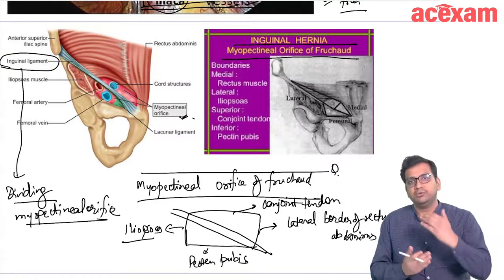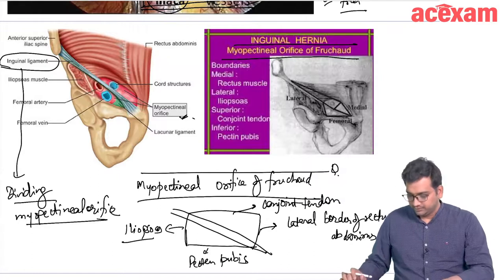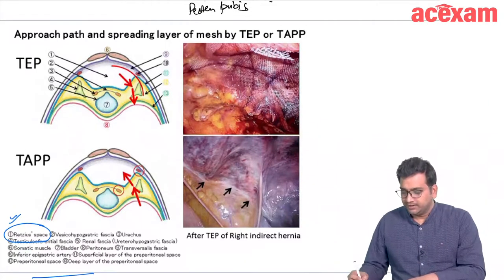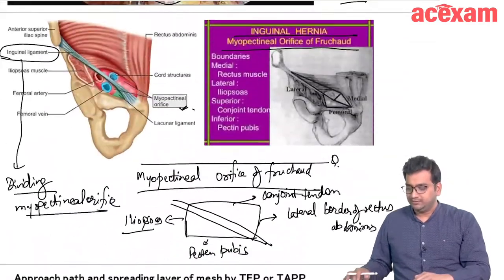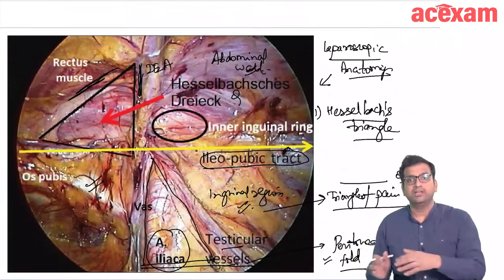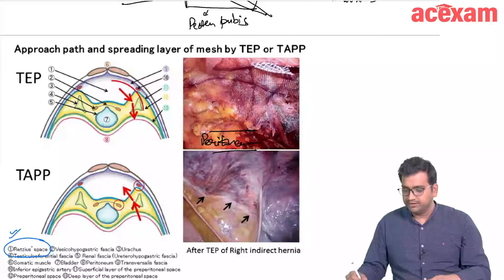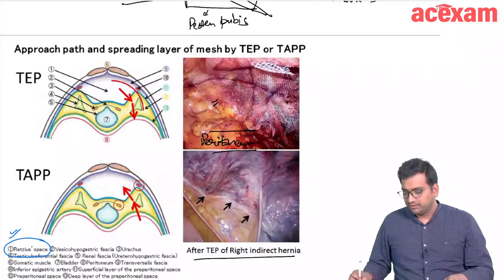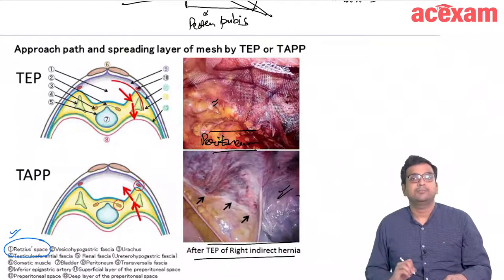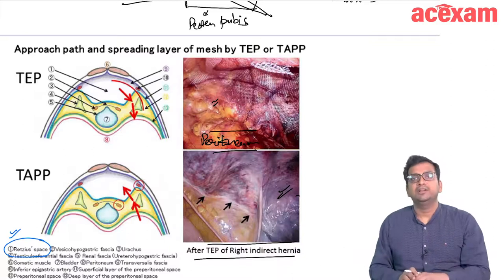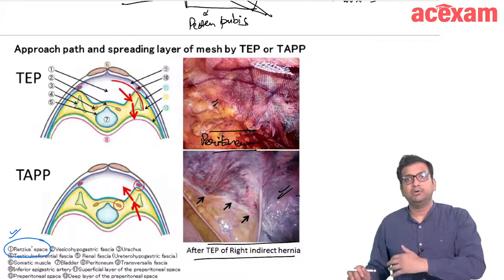In laparoscopic hernia repair we cover the entire myopectineal orifice. In TEP: we keep the peritoneum down, dissect the preperitoneal space, and place a mesh that covers all the defects anteriorly to the peritoneum. After desufflation, the mesh is in front of the peritoneum covering all defects and is shielded from abdominal contents by the peritoneum.